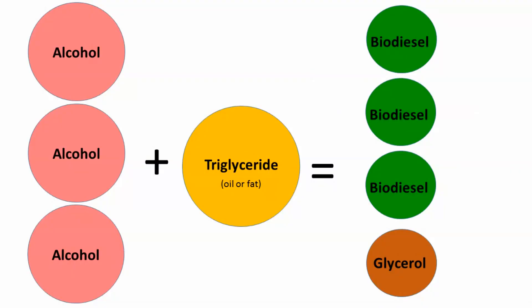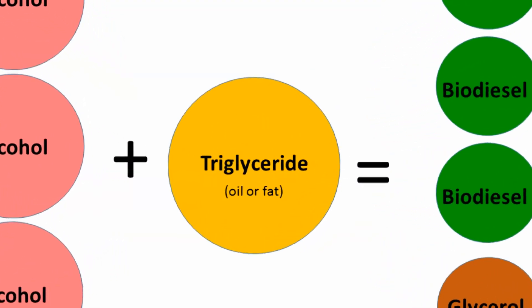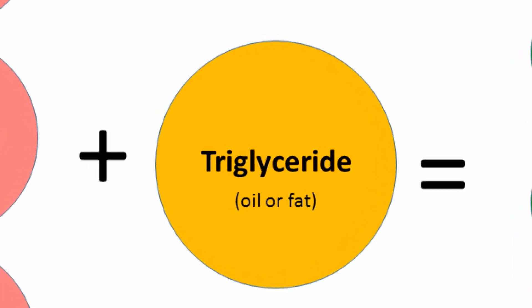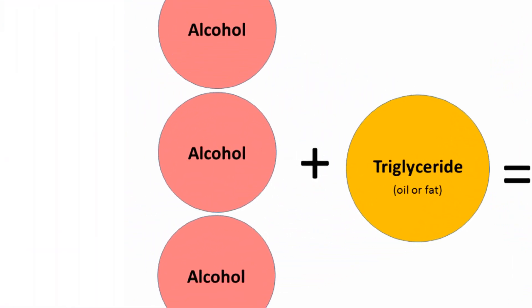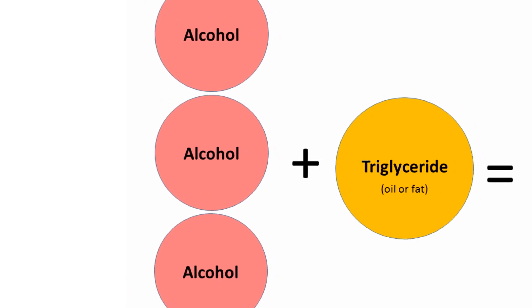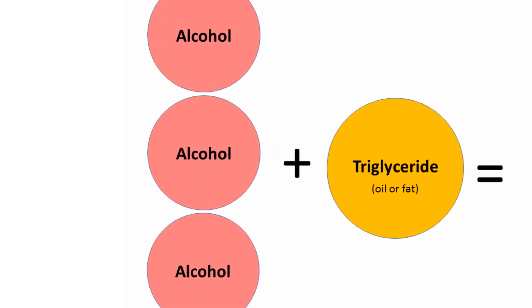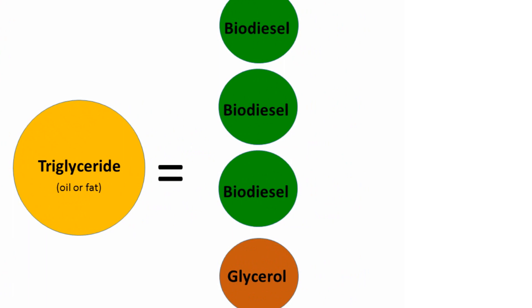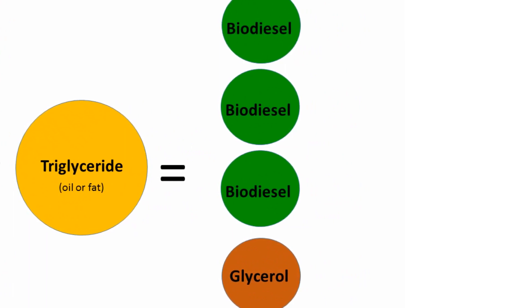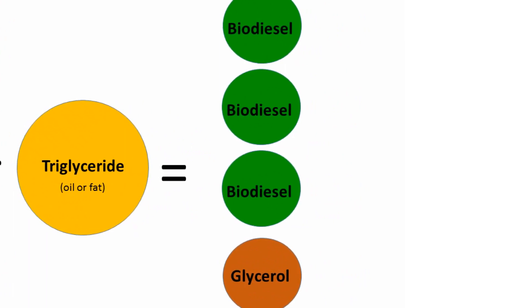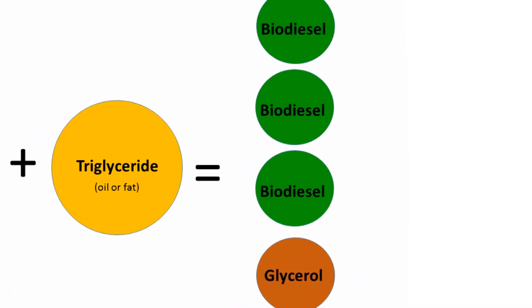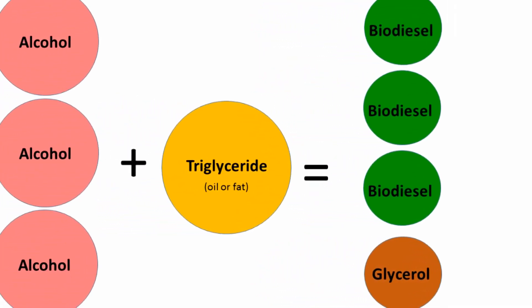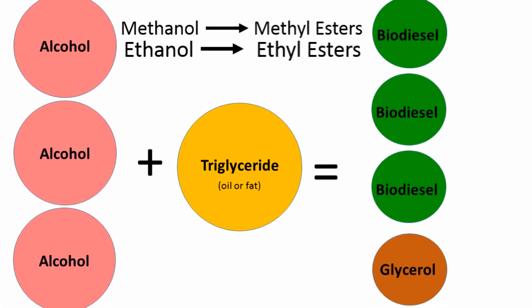Biodiesel is made when a natural oil or fat molecule — known in chemistry as a triglyceride molecule — reacts with three molecules of an alcohol, usually methanol or ethanol, to produce three molecules of biodiesel and one molecule of glycerol. In chemical terms, biodiesel is called methyl esters when made with methanol, or ethyl esters when made with ethanol.